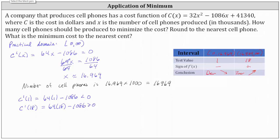From here we can recognize that the function changes from decreasing to increasing at x equals 16.969. Therefore the cost function is minimized at x equals 16.969, which means the company should produce 16,969 cell phones to minimize the cost.